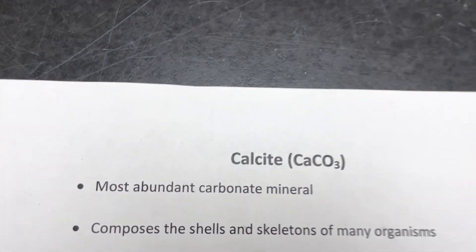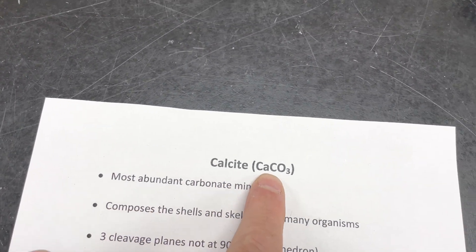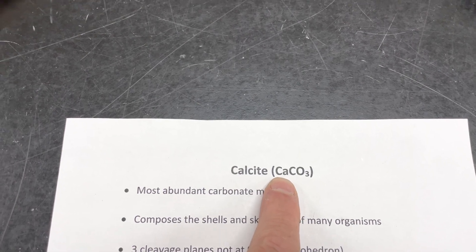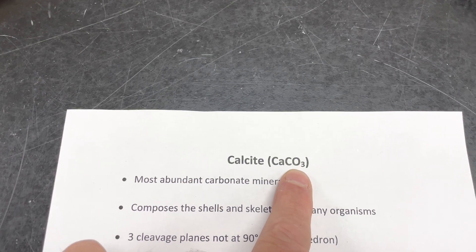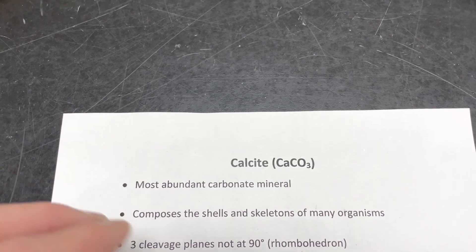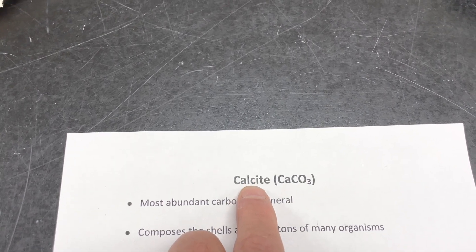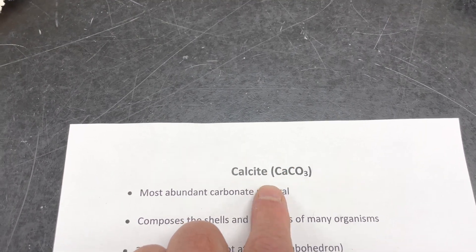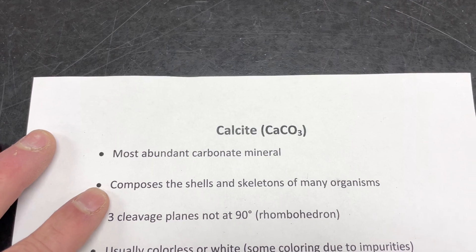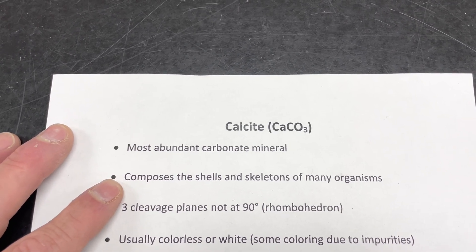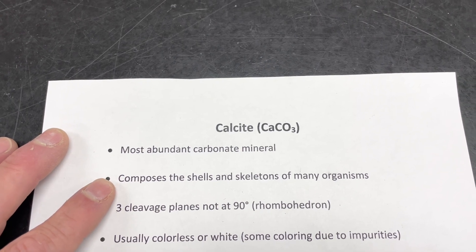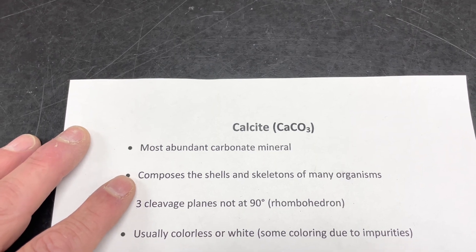Calcite is calcium carbonate — calcium, carbon, and oxygen. It is the most abundant of all the carbonate minerals. There are several mineral groups that contain elements along with CO3 carbonate, and calcite is the most common. It has a less stable, high-temperature form called aragonite, but we won't focus much on that. Calcite makes up a lot of the shells and skeletons of organisms, so as those organisms die, their shells and skeletons are often chemically preserved in the rock record.